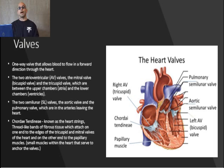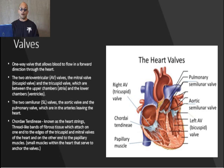Starting on the right side, from the right atrium to the right ventricle: the valve that separates these two chambers is the tricuspid valve. The right ventricle has its own valve that connects it to the pulmonary artery — this is the pulmonic valve, which allows blood to be sent to the lungs. Moving to the left side of the heart, the left atrium is separated from the left ventricle by the bicuspid or mitral valve. The left ventricle also has its own valve known as the aortic valve, which allows blood to be directed into the aorta and out to the body systems.